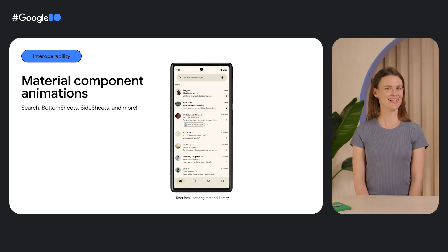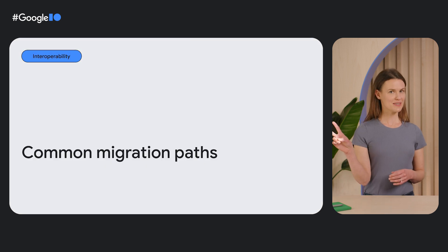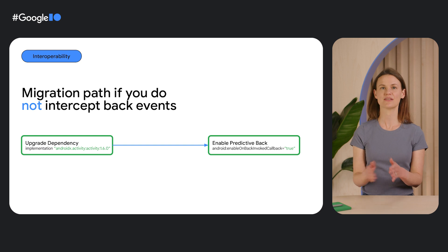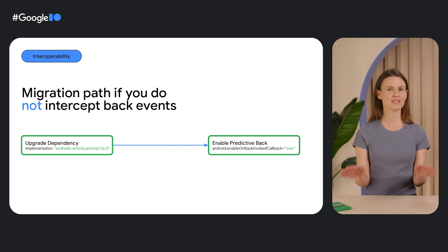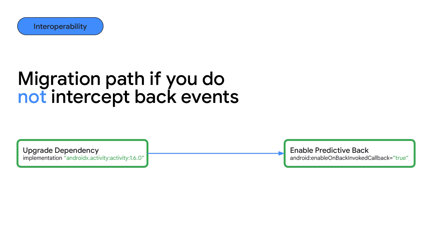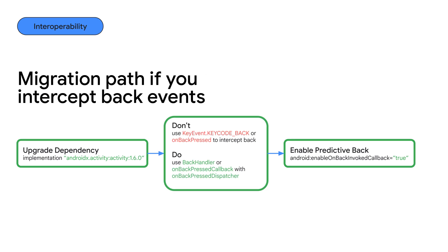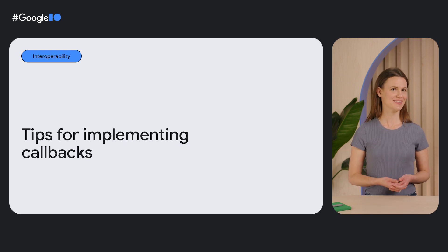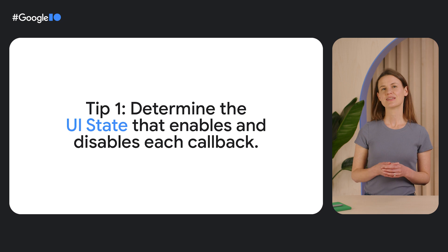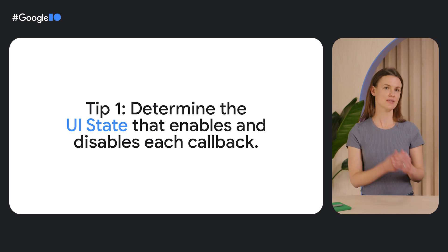And your app will come to life with predictive animations in five new material Android components. See the What's New in Material Design talk to learn more. There are two common migration paths. If your app does not intercept back events, all you need to do to get out-of-the-box predictive animations in your app is to upgrade your AndroidX activity dependency to the latest stable version and opt into the animations in the Android manifest. If your app does intercept back events, you'll also want to stop using key code back or on back pressed. Instead, use BackHandler with Compose or OnBackPressedCallback with its dispatcher for views. Here are four tips for implementing BackHandler or OnBackPressedCallback.